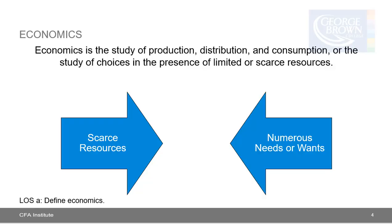Learning outcome statement A: define economics. Economics is the study of production, distribution, and consumption — or the study of choices in the presence of limited or scarce resources. Individuals and organizations have numerous wants: an individual may want a new automobile, more leisure time, or to retire early. A city may want new schools, better recreation facilities, or a bigger industrial park. Resources to meet these wants — labor, real assets, financial capital — are often limited or scarce. Therefore, individuals and organizations must make decisions regarding the allocation of scarce economic resources.